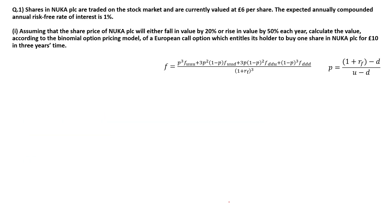Let's apply this to this exercise. The exercise says shares in NUCCA PLC are traded on the stock market and are currently valued at £6 per share. The expected annually compounded annual risk-free rate is 1%. Assuming that the share price will either fall in value by 20% or rise in value by 50% each year, calculate the value according to the binomial option pricing model of a European call option, which entitles its holder to buy one share in NUCCA PLC for £10 in three years time. So the £10 is the strike price.